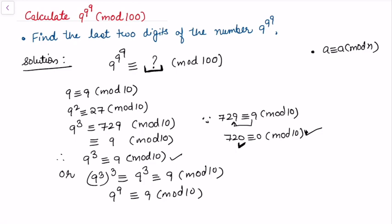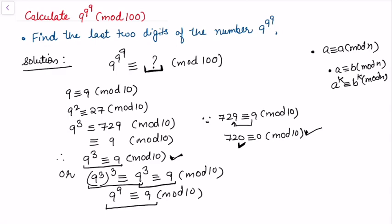This step is valid because if a ≡ b (mod n), then a^k ≡ b^k (mod n) — a standard property of congruences. So we raised both sides to the power 3, and since 9³ ≡ 9 (mod 10), we get 9^9 ≡ 9 (mod 10). We can write this as 9^9 = 9 + 10k for some integer k. We'll call this equation (★).